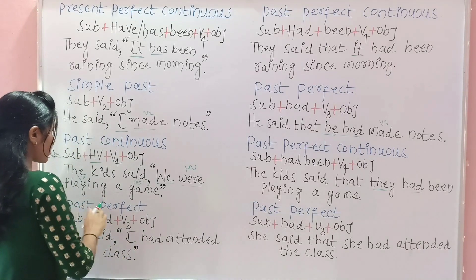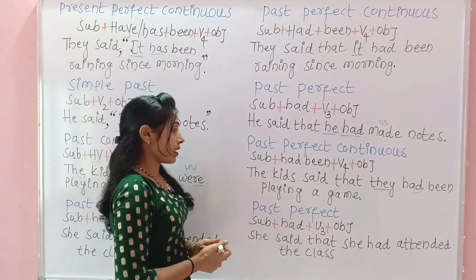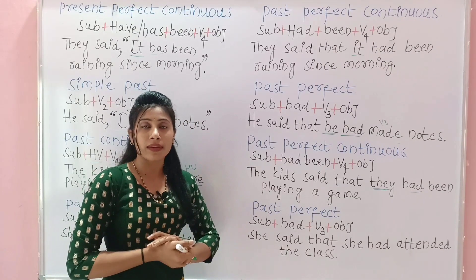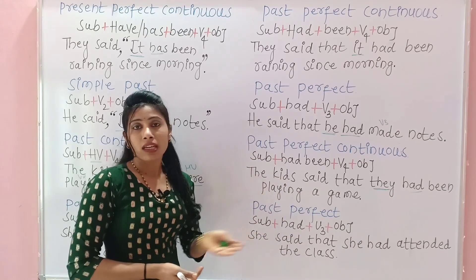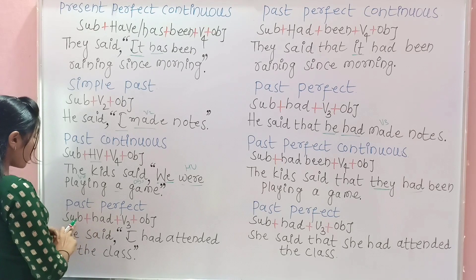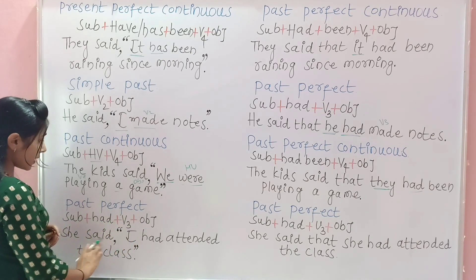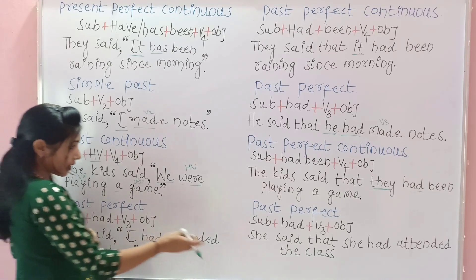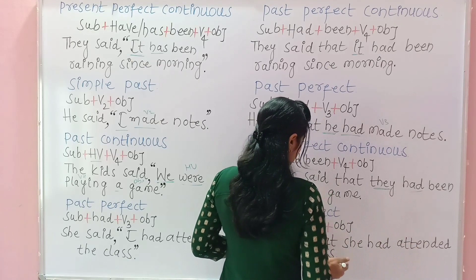Past perfect remains unchanged in indirect speech. If the tense is already past perfect in direct speech, it remains past perfect in indirect speech. The formula is subject + had + V3 + object. For example: 'She said, I had attended the class.' In indirect speech: 'She said that she had attended the class.'